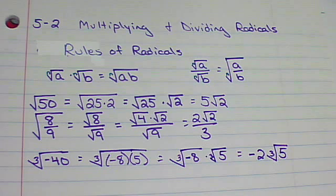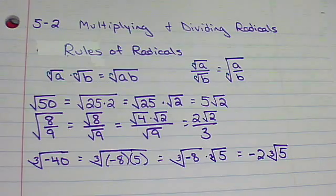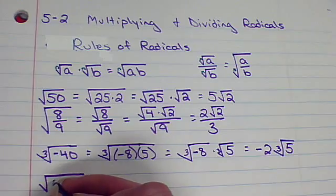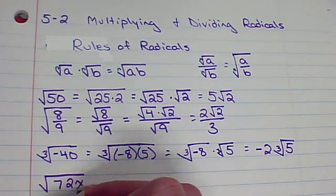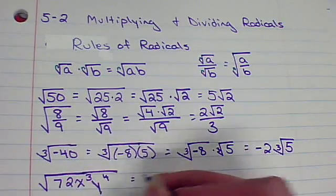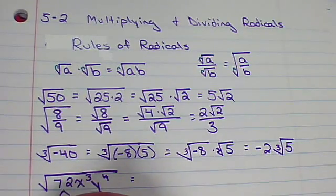Now, why is that useful? Well, there's a lot of reasons. It can help us break things down. It can help us put them back together. So, what if we had the square root of 72x³y⁴? Now, if we start actually looking at it this way, you know, we could break it down. That's 36 and 2.